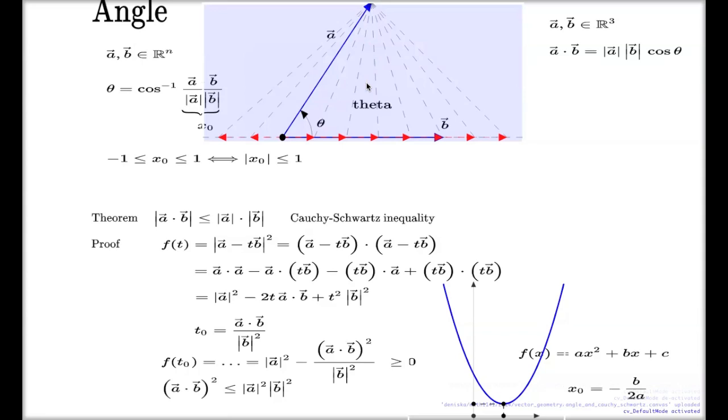How can we interpret that geometrically? Which of those dashed lines will represent the minimal distance from the tip of the vector A to the line spanned by the vector? Do you mind if I give him another person to say? Yeah, go ahead.